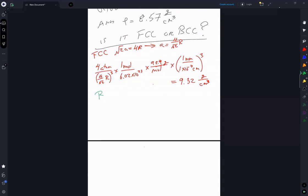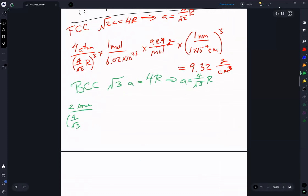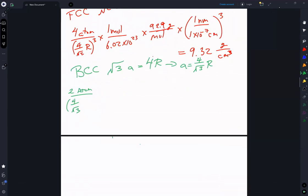In the case of the body centered cubic, we have square root of 3a is equal to 4r, so a is equal to 4 over square root of 3r. We have 2 atoms per unit cell, so that's 2 atoms per 4 over square root of 3 times r quantity cubed.